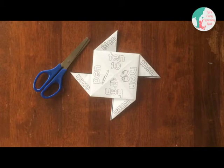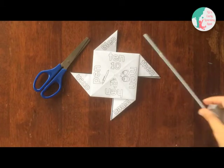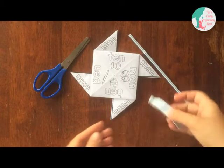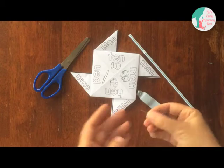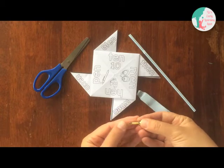To put our pinwheel together we're going to use a straw, some blue tack, and a paper fastener. In Australia we call them split pins.